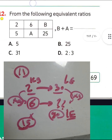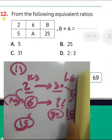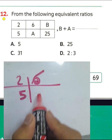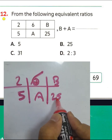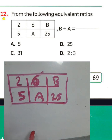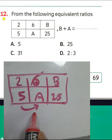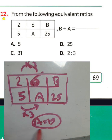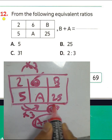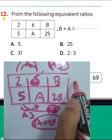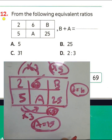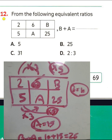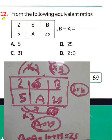From the table, find b plus e. We have values 2, 5, 6 and unknowns e and b and 25. To find e: 2 times 3 equals 6, then 3 times 5 equals 15, so e equals 15. For b: 5 times 5 equals 25, so 2 times 5 equals 10, meaning b equals 10. Therefore b plus e equals 10 plus 15 equals 25. Choose letter B.